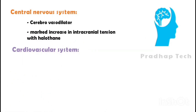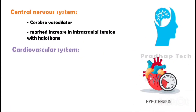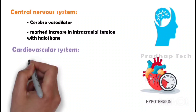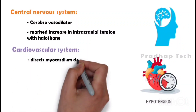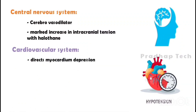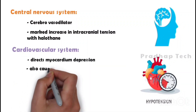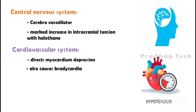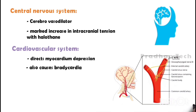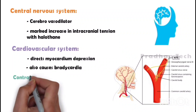Cardiovascular system: it causes direct myocardial depression leading to a fall in blood pressure, and also causes bradycardia. Bradycardia occurs because it blocks the carotid body receptor response and delays SA/AV node conduction. This is its vagomimetic action.